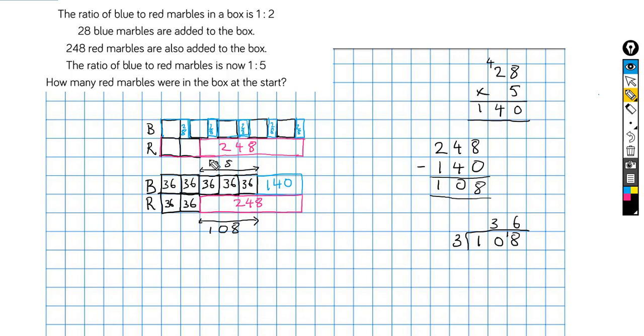And now I can calculate, so I can go back and find out what was the question, how many red marbles were in the box at the start. Well, in the box at the start were two portions of 36, because these are just the same, so this is 36 and this is 36. We just want to do 36 times 2, which is 72. So how many red marbles were in the box were 72.